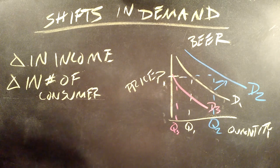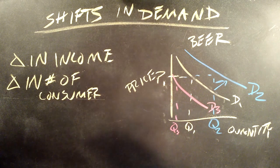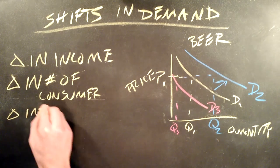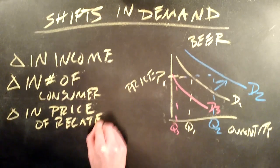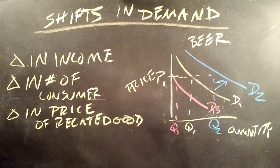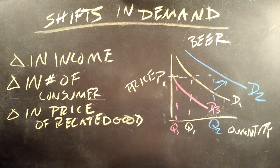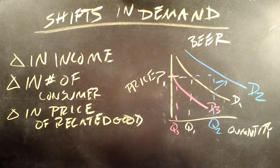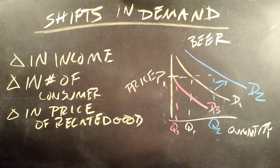A third reason why we might see a change in the demand curve is the price of a related good. What we mean by a related good is a substitute or a complement. So a substitute for beer might be hard liquor or another substitute might be wine.